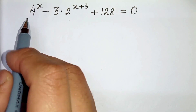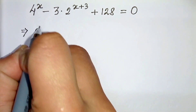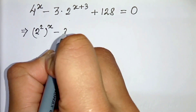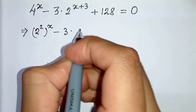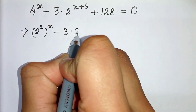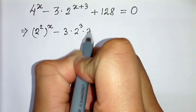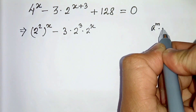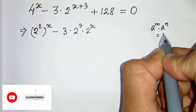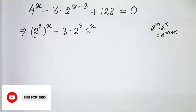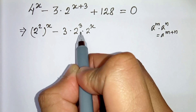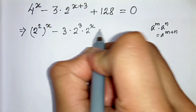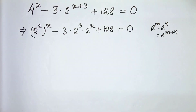We can write 4 as 2 squared, so 2 squared to the power x. And we can write 2 to the power x plus 3 as 2 to the power 3 times 2 to the power x, since we know that a raised to the power m times a raised to the power n can be written as a raised to the power m plus n. So we have written 2 to the power x plus 3 as 2 to the power 3 times 2 to the power x, plus 128 equals 0.